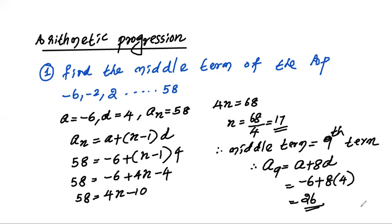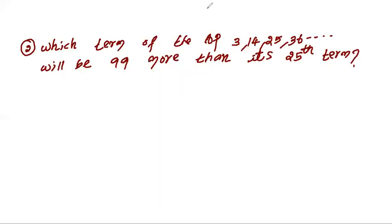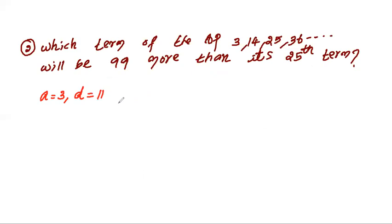Now moving to question number 2. Which term of the AP 3, 14, 25, 36 will be 99 more than its 25th term? Directly, A equals 3 and common difference D equals 11, because 3 plus 11 gives 14.